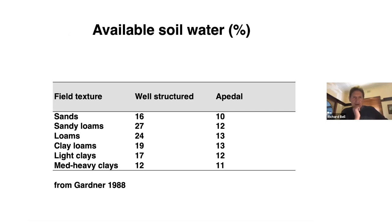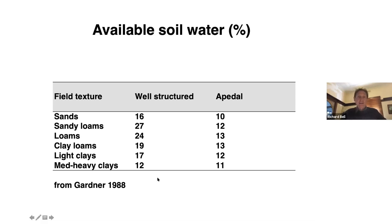Data from a standard soil physics textbook shows that plant available soil water contents can be improved with good structure. Regardless of texture, if there's good soil structure with plenty of peds, you can increase the amount of plant available water quite substantially.